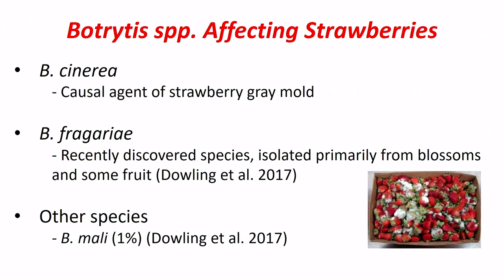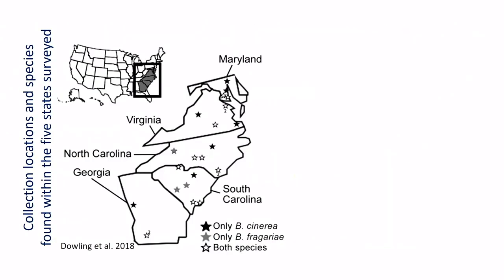The first is Botrytis cinerea — the very classic, very important causal agent of strawberry gray mold. But we also discovered a relatively new species: Botrytis fragariae, which can also cause Botrytis on strawberries in the United States. Other species exist but are very minor — around one percent.